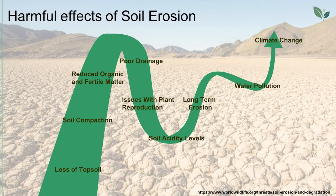Having mentioned all the previous, let's see now the harmful effects of soil erosion: loss of topsoil, soil compaction, reduced organic matter and fertile matter, poor drainage, issues with plant production, soil acidity, long-term erosion, water pollution, and climate change. The phenomenon of soil erosion might not seem to have a large scale impact at the time it occurs, although its side effects can gradually contribute to climate change.